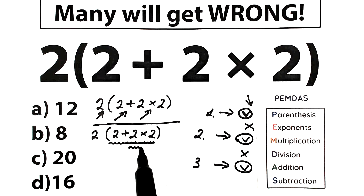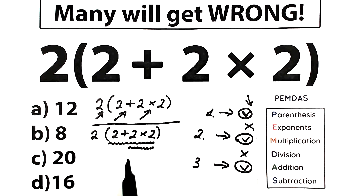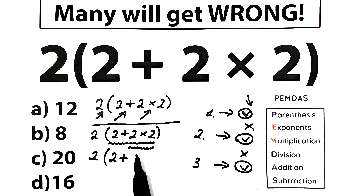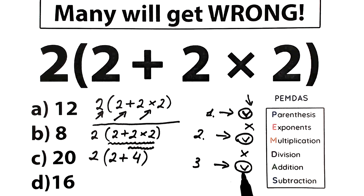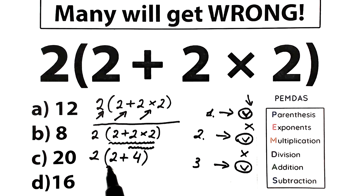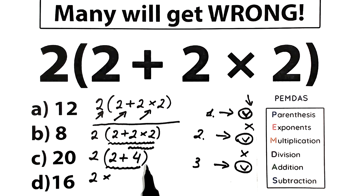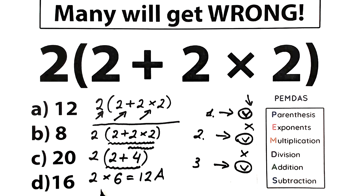So we should multiply 2 times 2 — this is our second step after parentheses. So we have 2, and inside the parentheses 2 plus 2 times 2. We compute 2 times 2 equals 4. Now for the addition part, which has lower priority than multiplication: 2 plus 4 equals 6. So we have 2 times 6 equals 12. Our correct answer is option A.